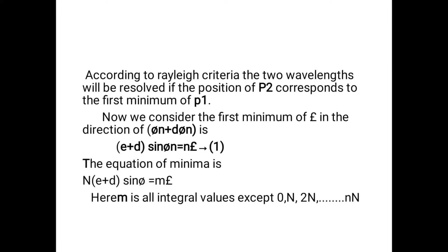According to Rayleigh's criterion, two wavelengths will be resolved if the position of P2 corresponds to the first minimum of P1. We consider the first minimum of lambda in the direction of theta_n plus d_theta_n. At this position the two waves are resolved.